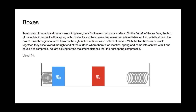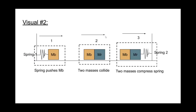Both boxes are sitting level on a frictionless horizontal surface. On the far left of this surface, the blue box is in contact with a spring of constant K and has been compressed a certain distance Xi, or initial position. With the blue box initially at rest, it begins to move towards the right until it collides with the red box. With these two boxes now stuck together, they slide toward the right end of the surface where there is an identical spring, and come into contact with it, causing it to compress.